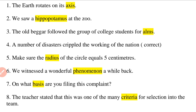Question 5: 'Make sure the radius — R-A-D-I-U-S — of the circle equals five centimeters.' The correction is changing 'ready' to 'radius.'